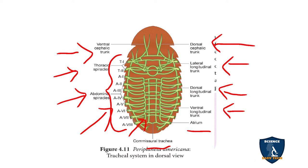In the 10 pairs, 2 pairs are in the thoracic region and the remaining 8 pairs are in the abdominal region. And you can see the openings — that is called spiracles.